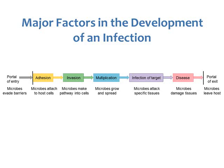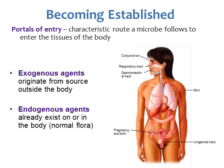Finally, we have the portal of exit, so the microorganism can leave the host to go find a new host. We're going to start with the portals of entry — becoming established means the microorganism has to get into the body. These are called the portals of entry: characteristic routes that microorganisms follow to enter the tissues in the body. Basically any part of your body that has a hole exposed to the outside environment is a portal of entry.